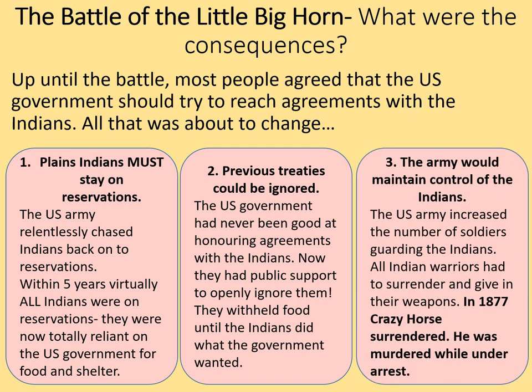Thirdly, the army would maintain control of the Indians. The US Army increased the number of soldiers guarding the Indians, and all Indian warriors had to surrender and give up their weapons. In 1877, during one such surrender, Crazy Horse surrendered — and was murdered whilst under arrest.